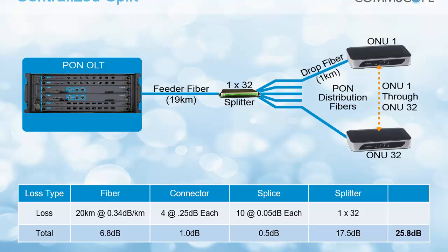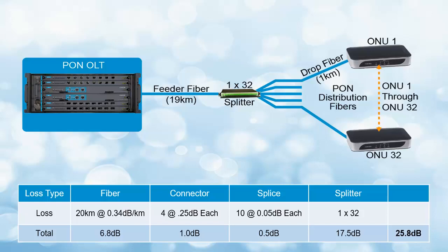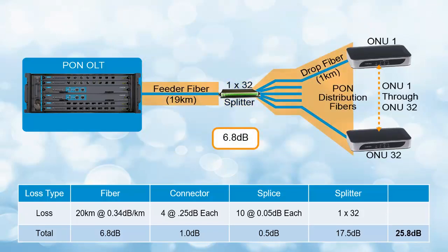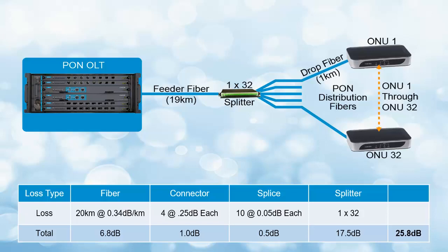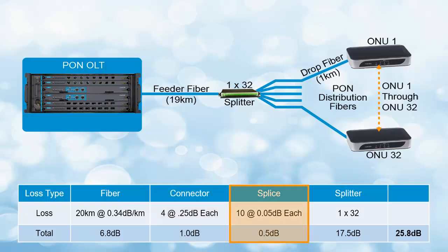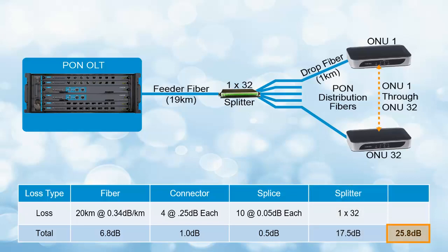The centralized split architecture employs a single splitter for each OLT PON port. Based on the location of the OLT and end user groups, one or more multi-fiber cables may be used to connect the OLT PON ports to each splitter closest to the end user groups. The example shows a single 1 to 32 ratio splitter. Assuming a 20 km fiber cable from the OLT to the ONU, 4 pairs of LC APC connectors in the link, and 10 splices, the link loss is: 6.8 dB for the fiber, plus 1 dB for connectors, plus 0.5 dB for splices, plus 17.5 dB for the splitter — equating to a total loss of 25.8 dB, which is within the PON optical budget.